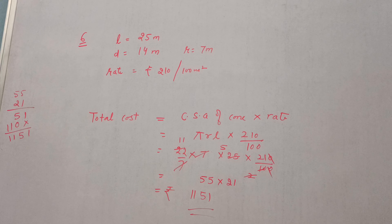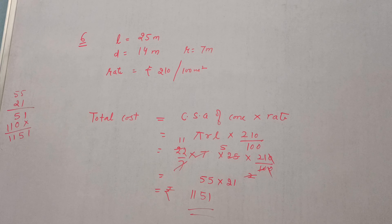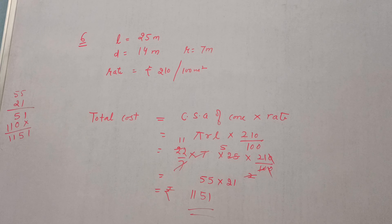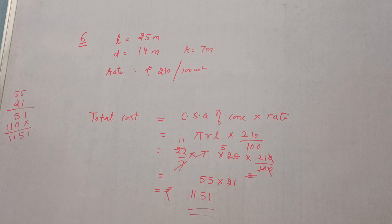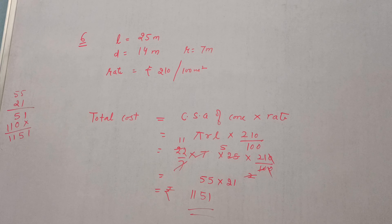Rupees 1,151. This must be the cost of whitewashing the curved surface area. So this is question number 6 of exercise 13.3. I hope you all have understood. Thank you for watching. Have a nice day.